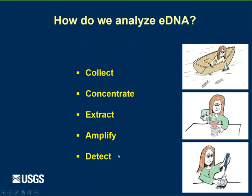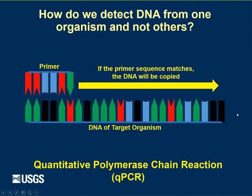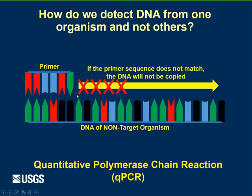And because you can't see DNA with a naked eye, we use lights to detect it. We use a process called quantitative polymerase chain reaction, or qPCR for short. We put the DNA into a chemical reaction where we supply short DNA molecules called primers. If the primer matches the DNA sequence of our target organism, the chemical reaction will proceed and make copies of that DNA. If it does not match, the DNA will not be copied. That's how we selectively amplify only the DNA that we're looking for and ignore the rest.